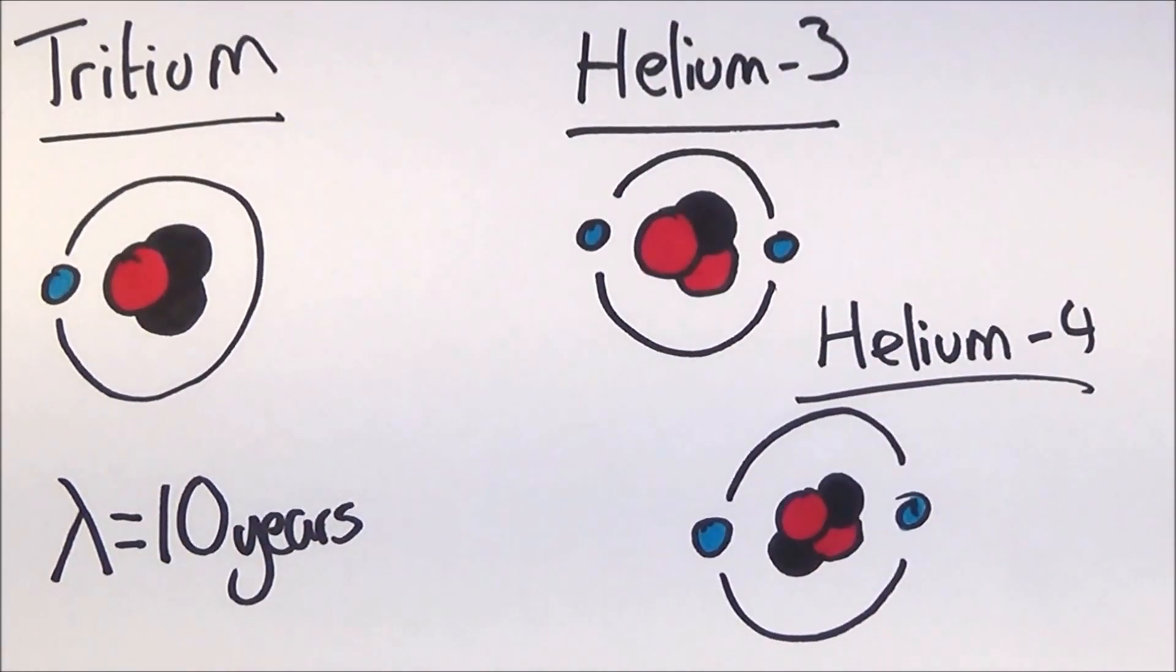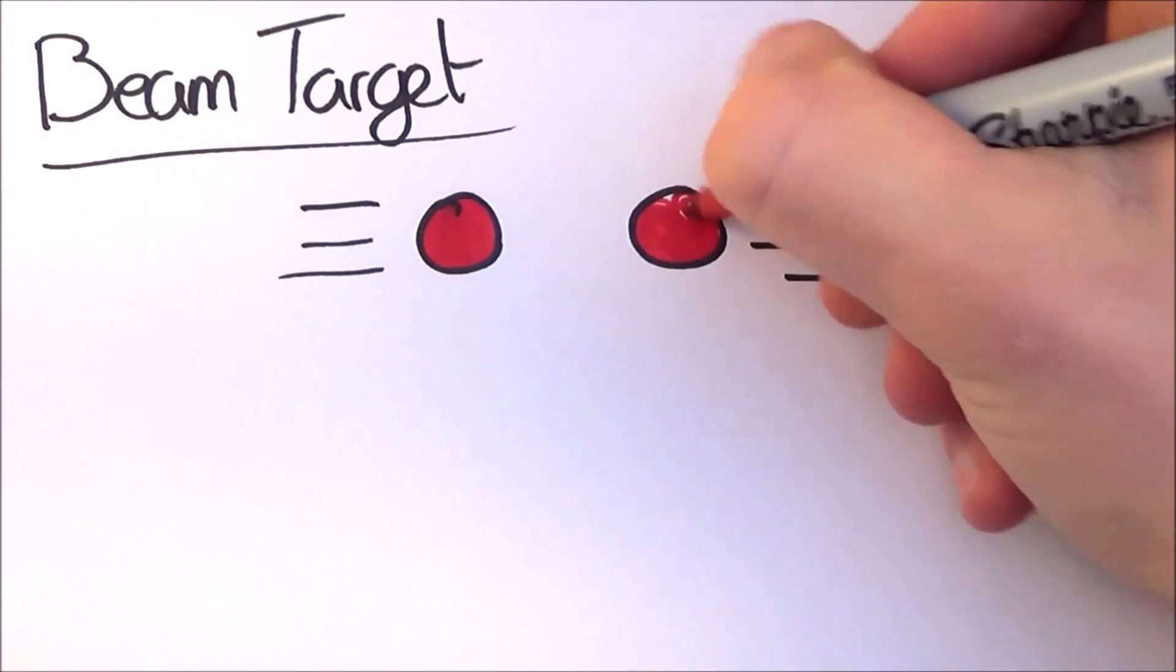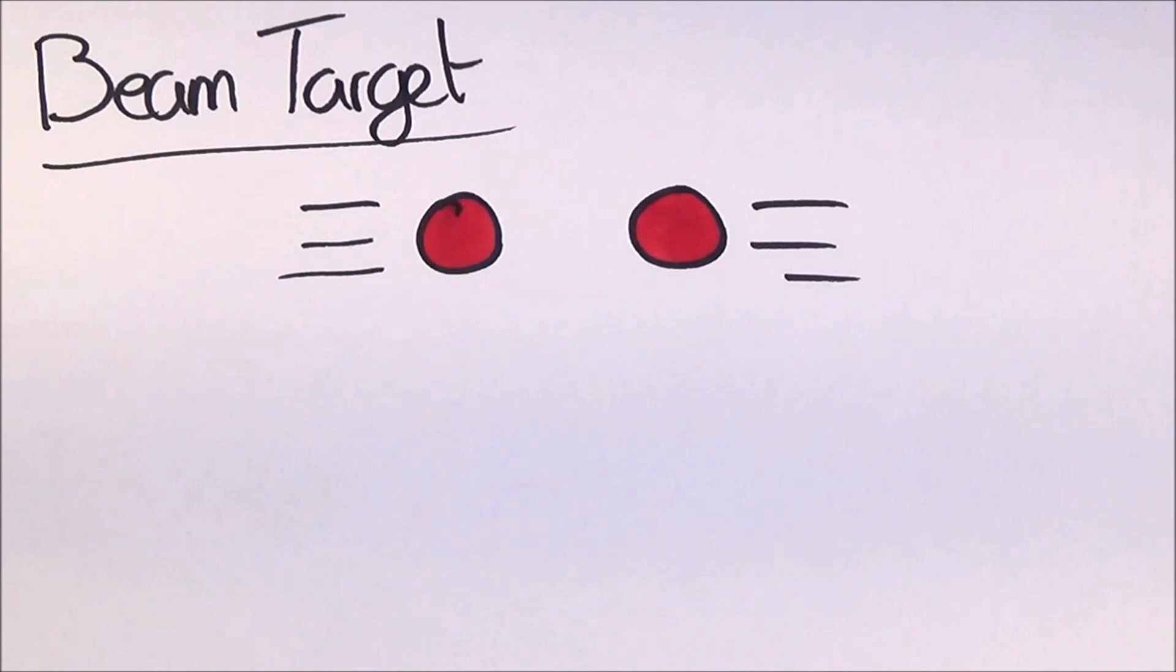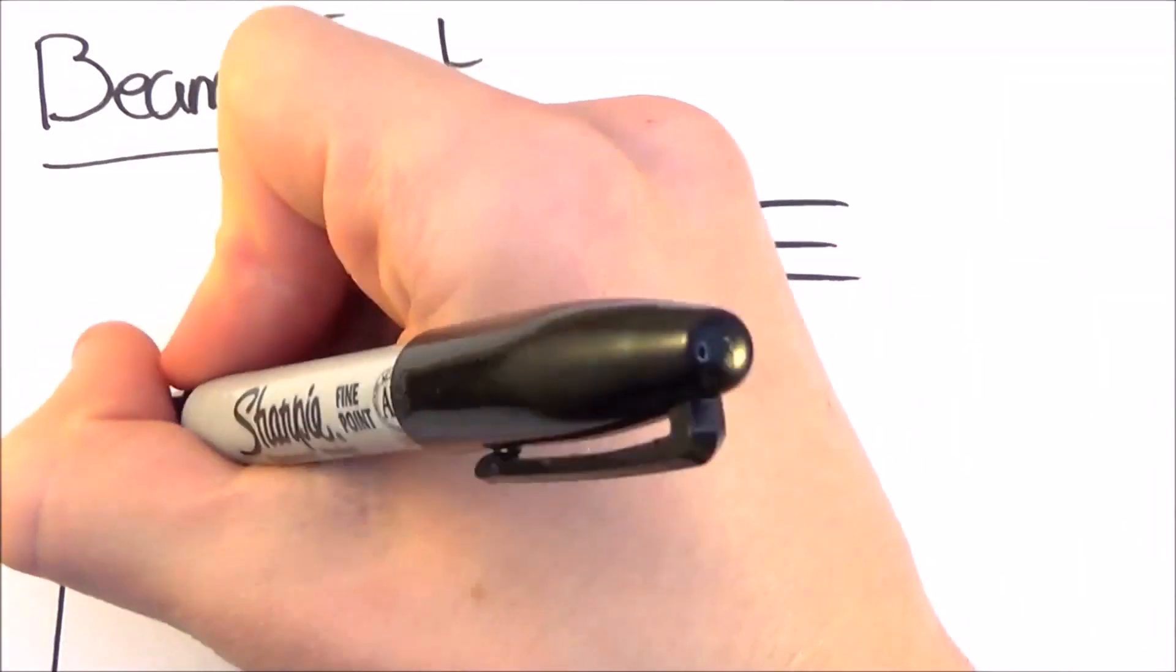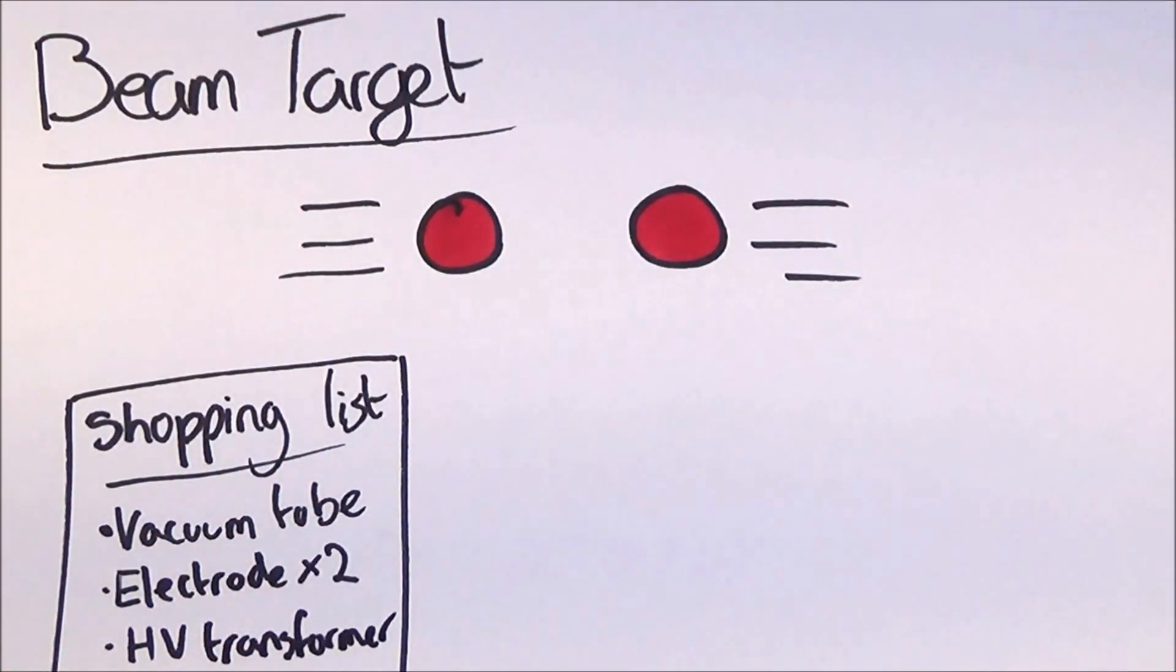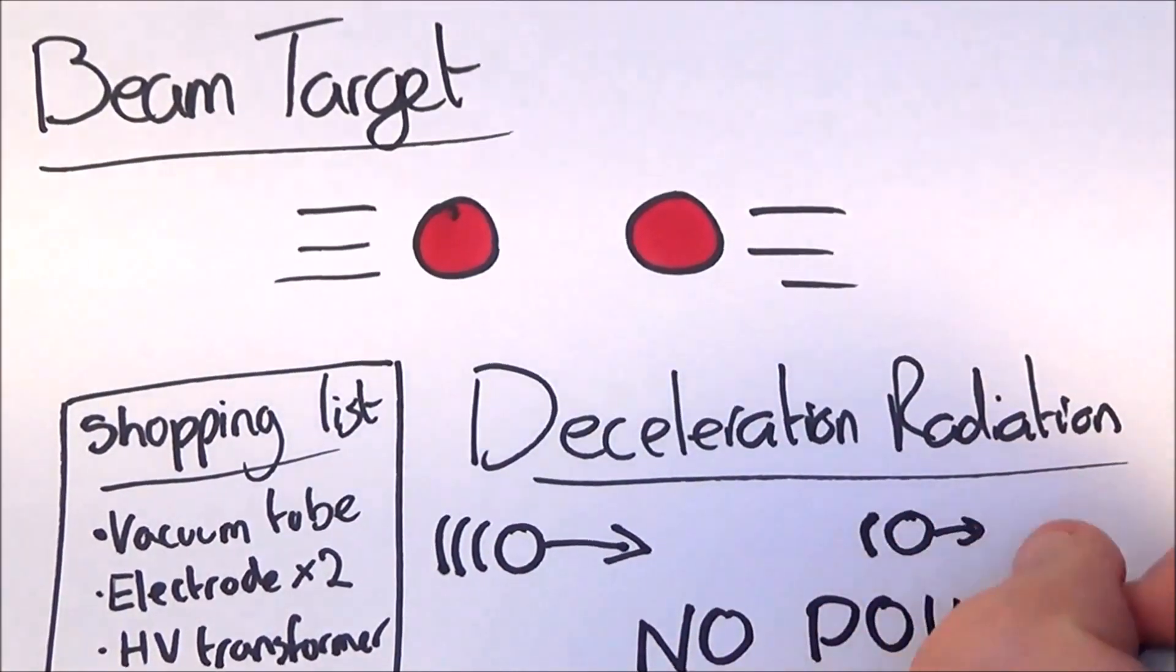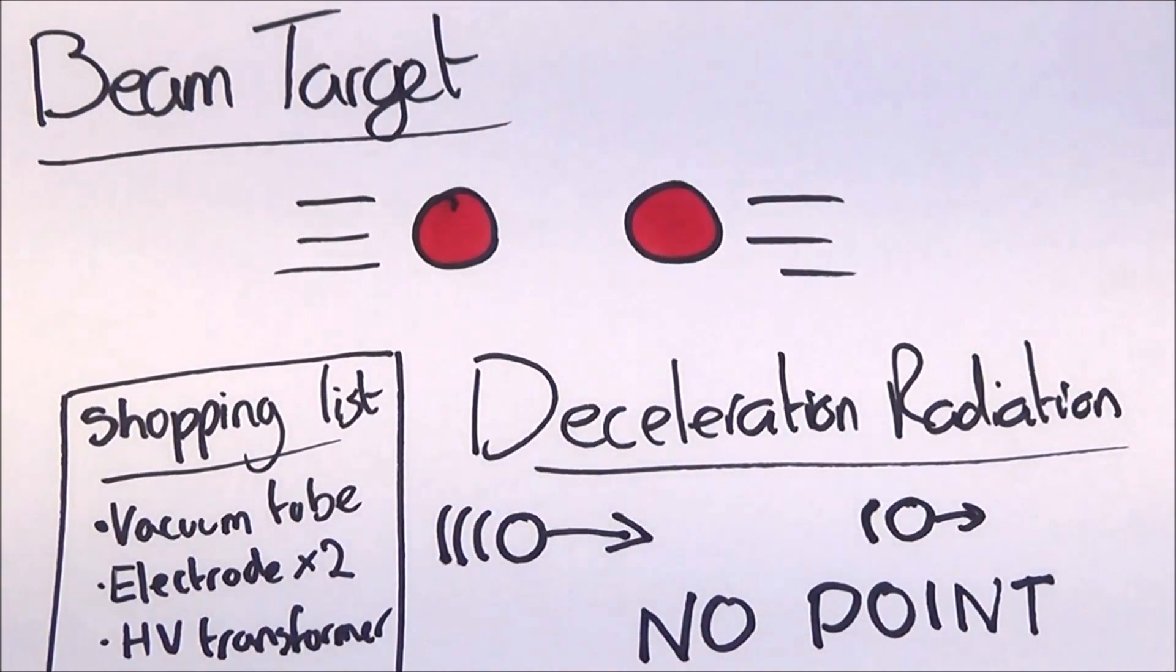The most common fuel is the combination of deuterium and tritium. The third type of fusion is beam target fusion. This works by accelerating two nuclei in velocities so high that fusion can occur. It is relatively easy to do and can be done very efficiently as well. All it takes is a vacuum tube, two electrodes and a high voltage transformer. Fusion can occur at as little as 10,000 volts between the electrodes. However, the main problem is that most of the energy is wasted on deceleration radiation. That is the radiation released when a charged particle decelerates and will repel the other charged particle. This means that there is no real point to it. It also doesn't release much energy at all.